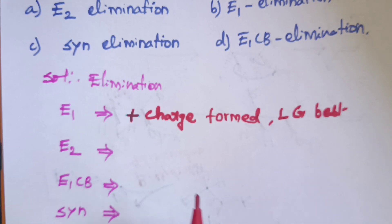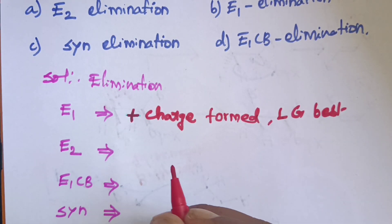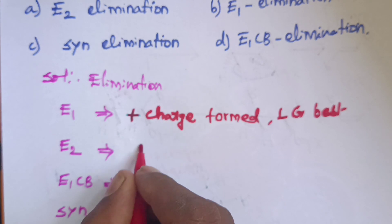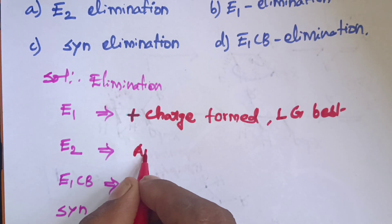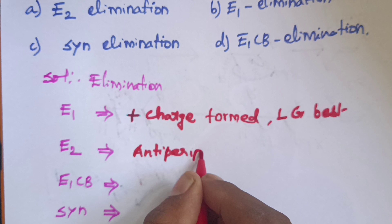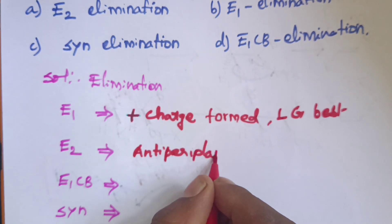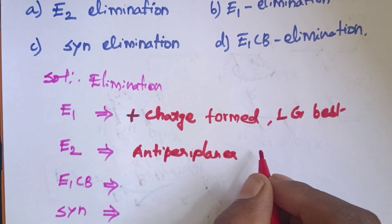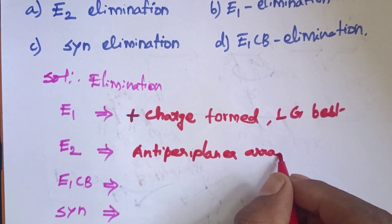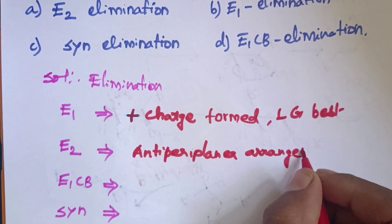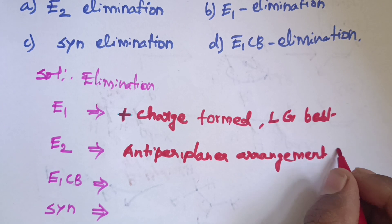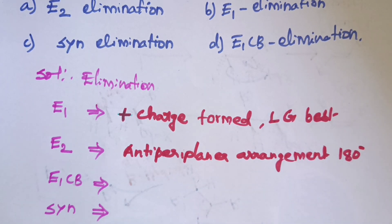E2 elimination reaction: the leaving group and proton must be in an anti-periplanar arrangement — that is a 180 degree arrangement.